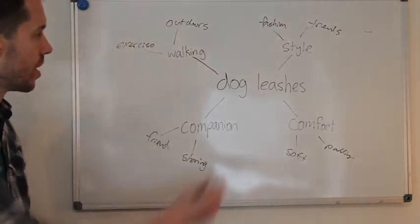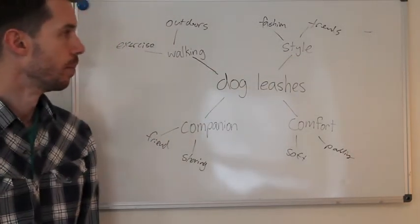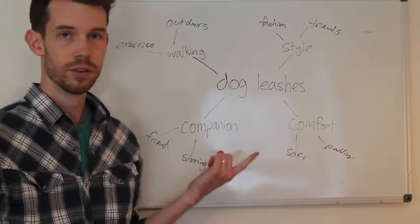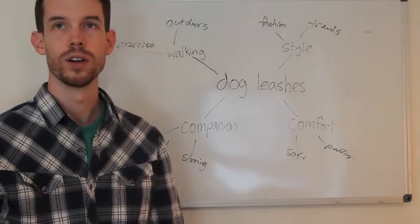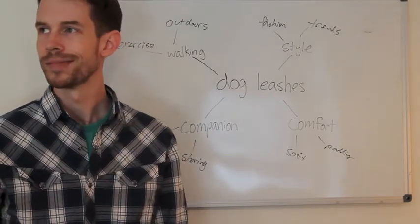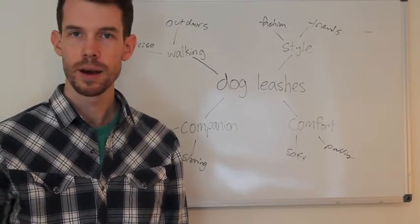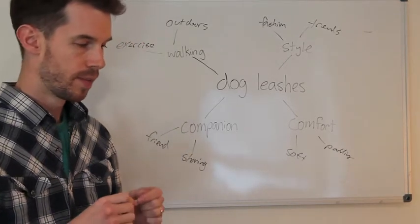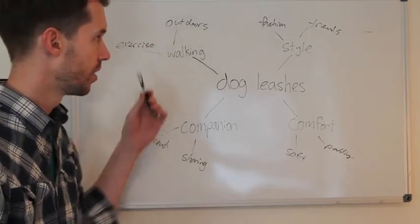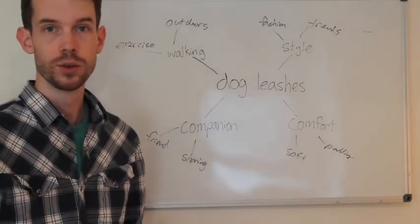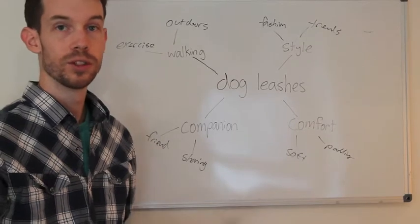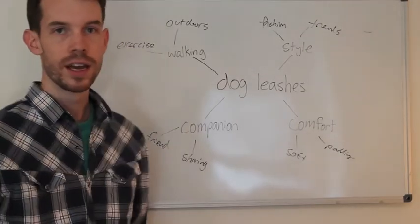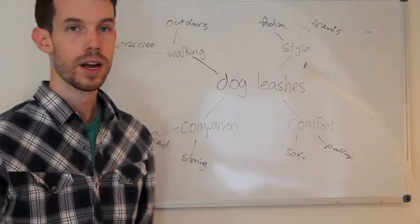You can keep expanding off of this. There are some great tools out there that let you do this digitally. There's one called — I think it's Text to Mind Map — I'll link to it in the post. It's a great tool that makes this a little more visual and lets you work through it. Get as many words on there as you can, and just start linking them together.